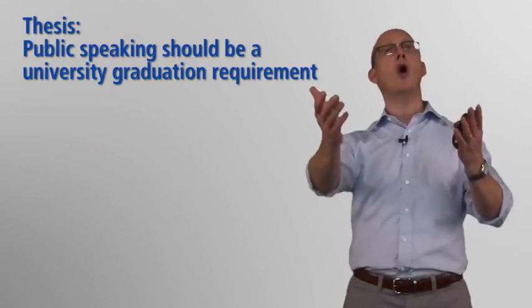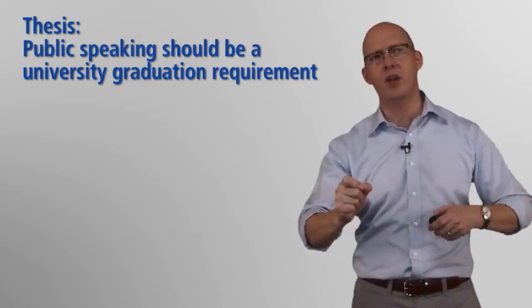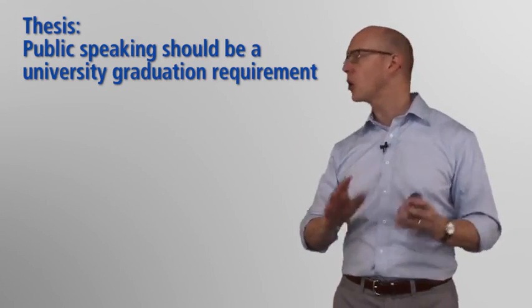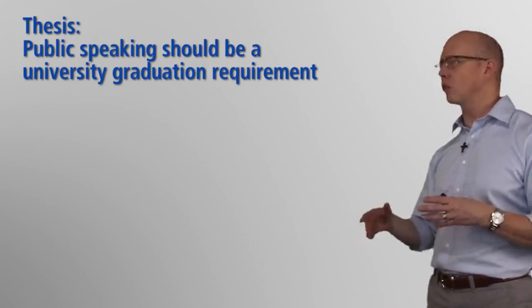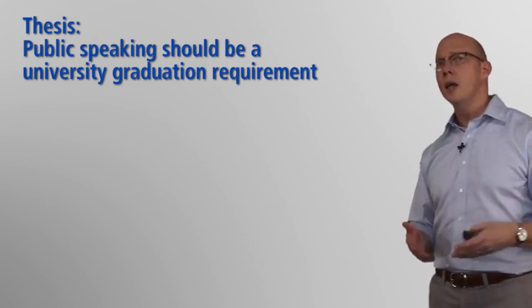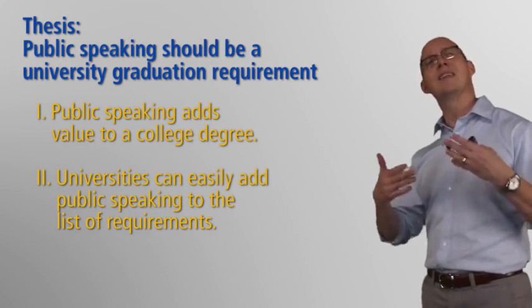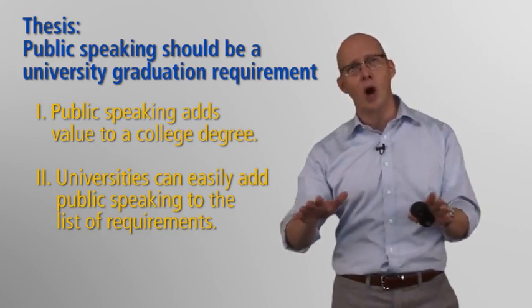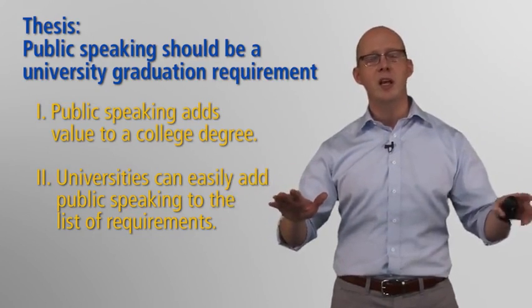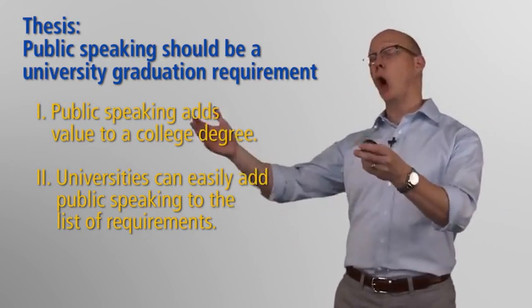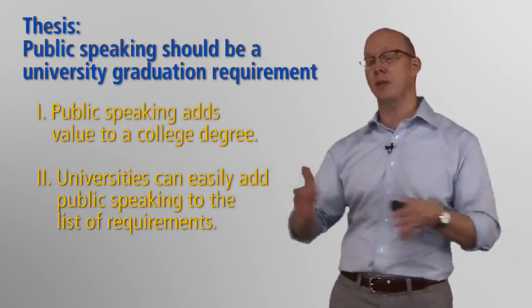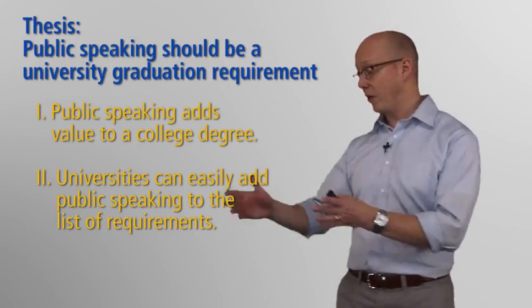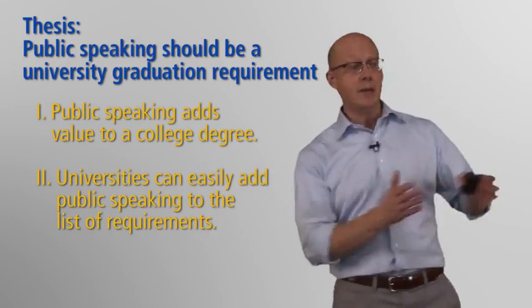I'm not saying all your main points must be exactly the same length and scope, but there should be a clear rationale driving the arrangement. Here's a better version: 'Public speaking should be a university graduation requirement because public speaking adds value to a college degree, and because universities can easily add public speaking to the list of requirements.' Here they deal with different realms — benefit and feasibility. I arranged them from large to smaller idea, benefit being bigger than feasibility, though you could easily swap the order and lead with feasibility.